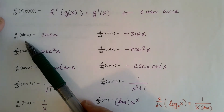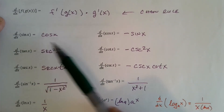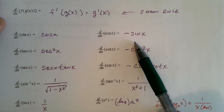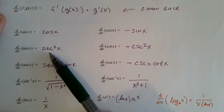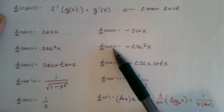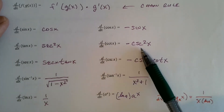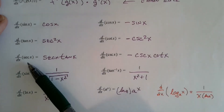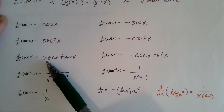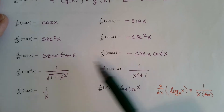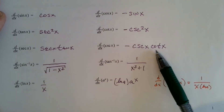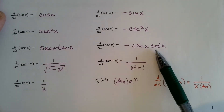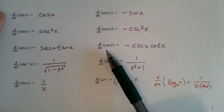Derivative of the trig functions: derivative of sine of x is cosine of x; derivative of cosine of x is negative sine of x; derivative of tangent x is secant squared x; derivative of cotangent is negative cosecant squared x; derivative of secant x is secant x times tangent x; derivative of cosecant x is negative cosecant x times cotangent x. You do need to know all six of those.